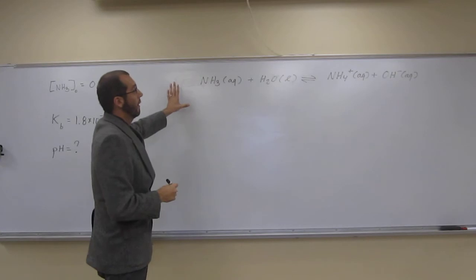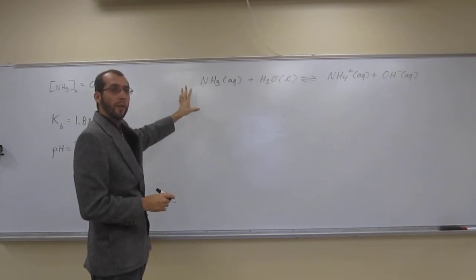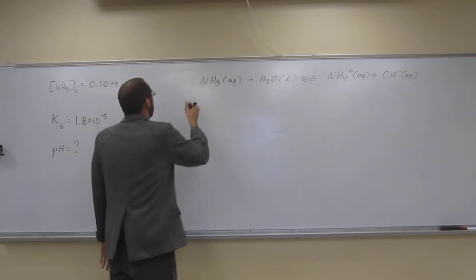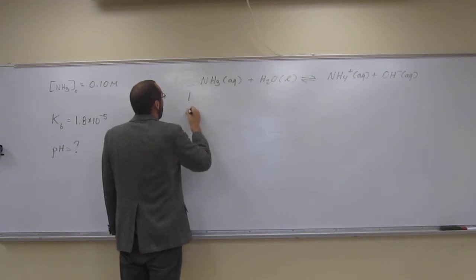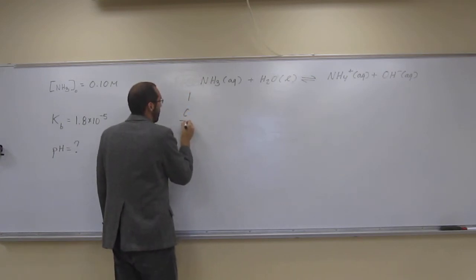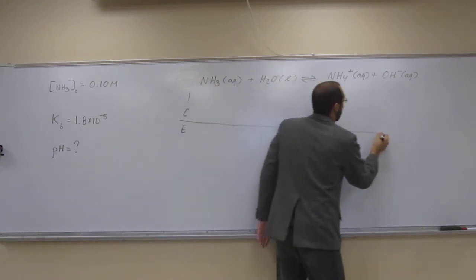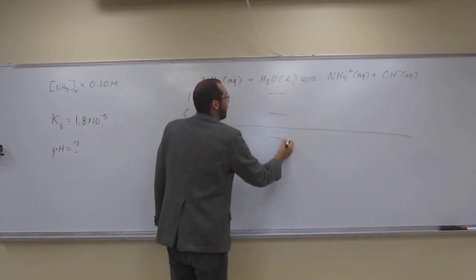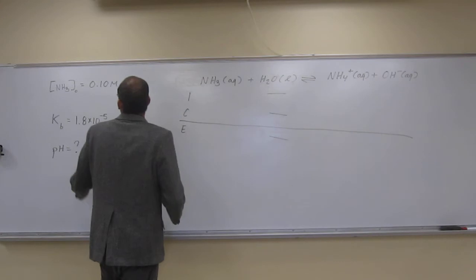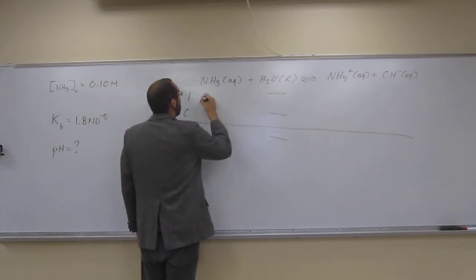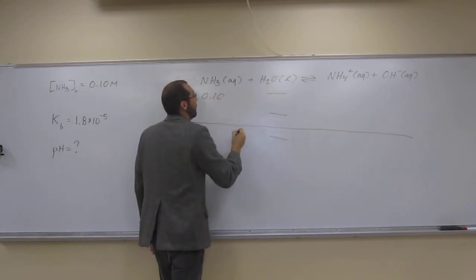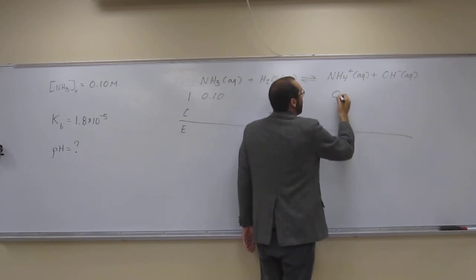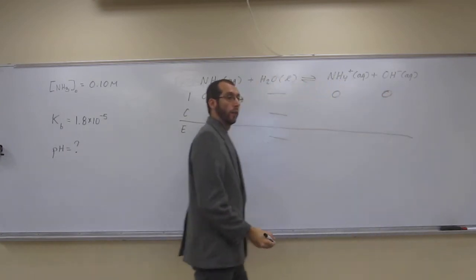So this is a balanced chemical equation. If it wasn't, you'd have to balance it. So let's do this I, C, E. Remember, with liquids, just cancel them out. It gave us the initial concentration of ammonia, 0.10. We didn't have any ammonium ion or any hydroxide ions.